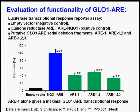The positive control was quinone reductase ARE, NQO1 ARE. Transcriptional response was maximal in both when ARE1 was present and was no higher when ARE2 and ARE3 were also present. In further analysis, we were able to mutate ARE1 and lose all transcriptional activity, confirming that it is only ARE1 which is a functional ARE in the glyoxalase 1 gene regulatory region.